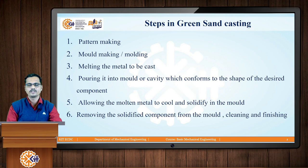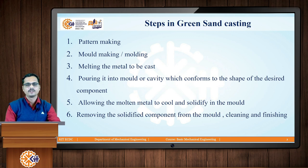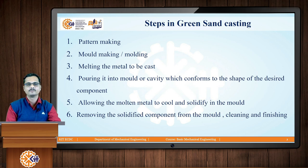In step number 4, we pour this molten metal into the mould cavity which conforms to the size and shape of the casting to be produced. In step number 5, we allow the mould to cool and solidify. Generally for the cast iron family, the solidification time is 35 to 40 minutes. After the mould is cooled and solidified, in step number 6 we remove the solidified piece of metal known as a casting by breaking the mould, and then by cleaning and finishing — removing the elements of the gating system using the grinding process — we get the semi-finished casting.